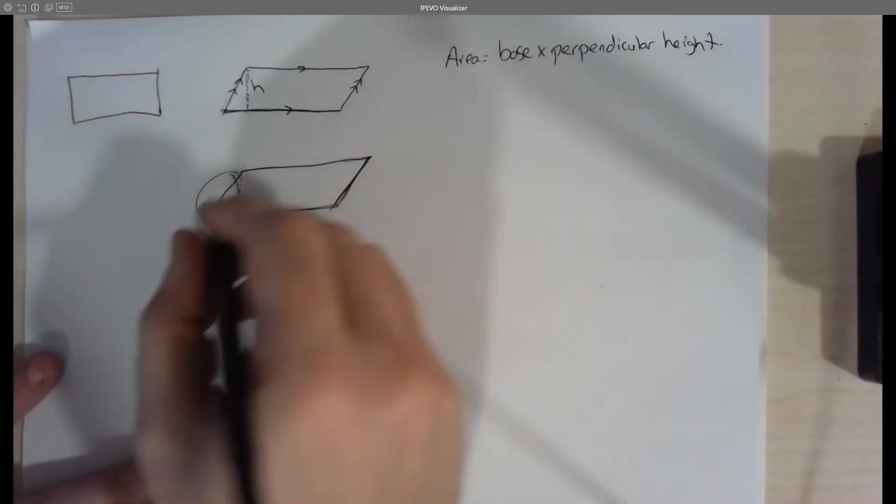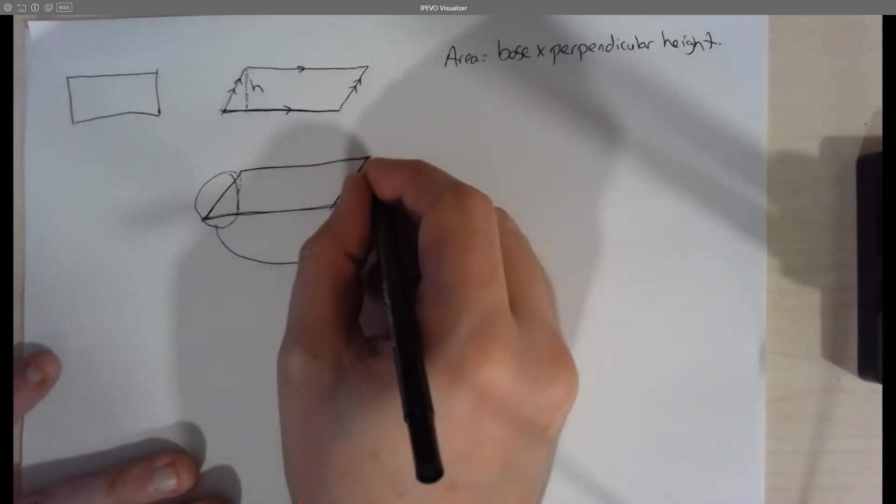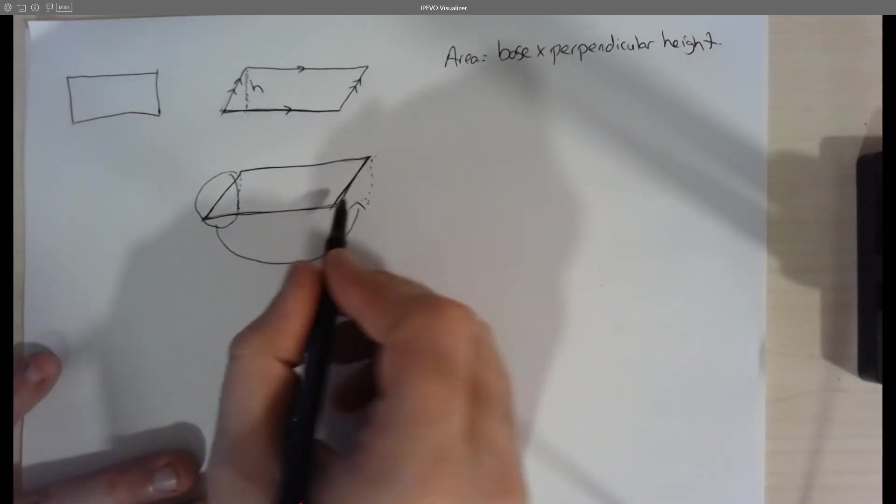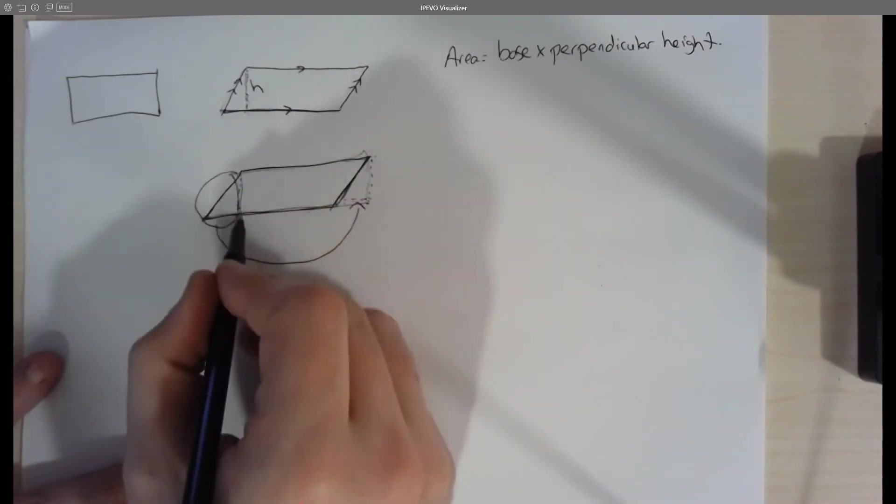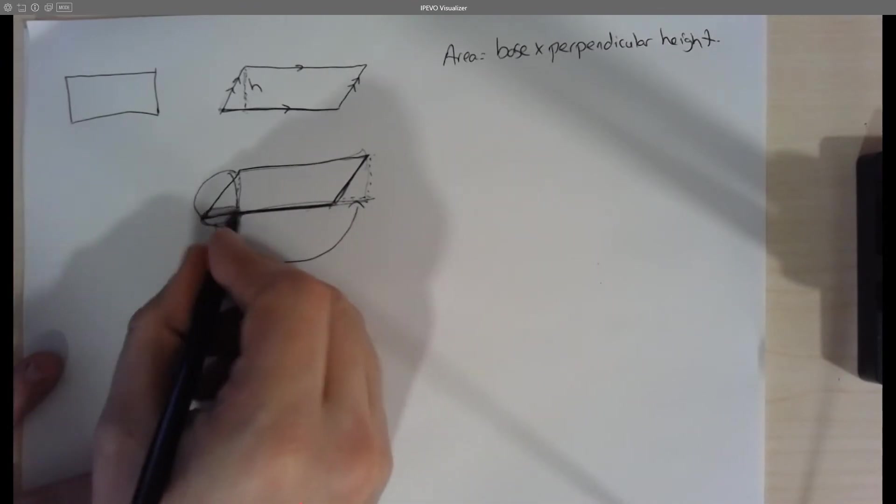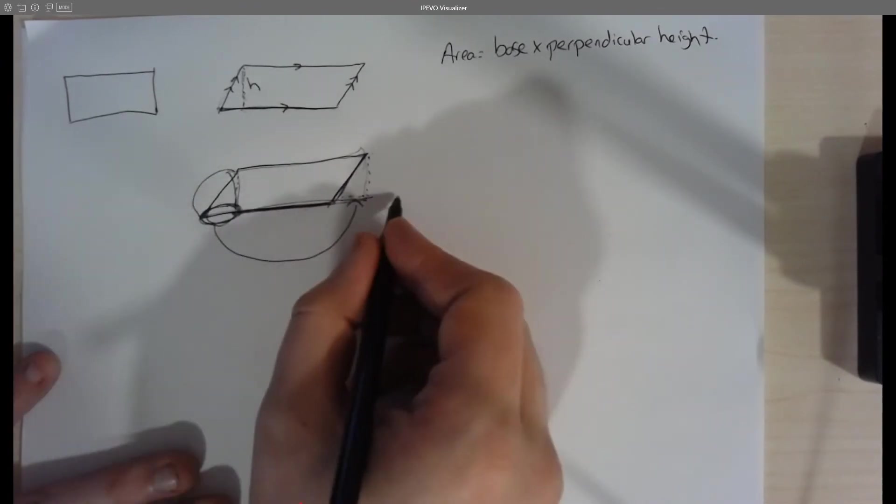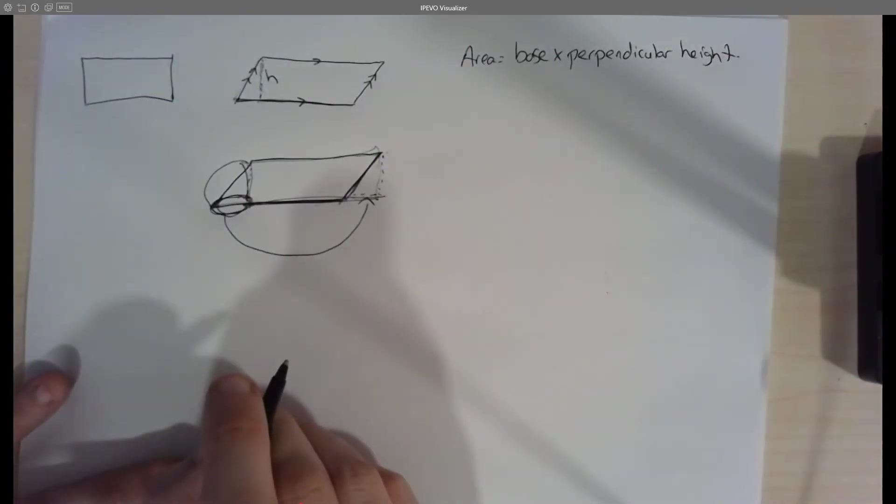...taking that completely off, flipping it and putting it here. What we would end up with is a shape that looks like this over on this side, or basically a rectangle where we have this length here, plus this dotted length, which is this length here, making the whole base. And then the height is just the distance between the two parallel lines.